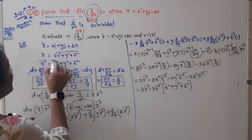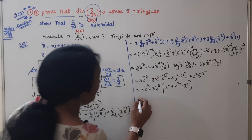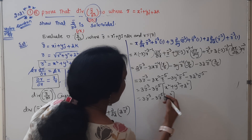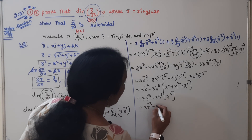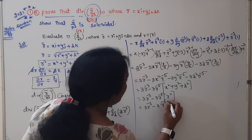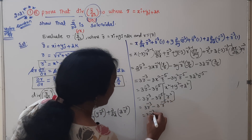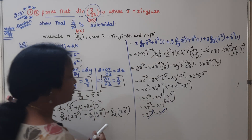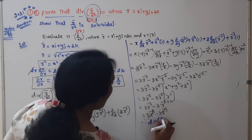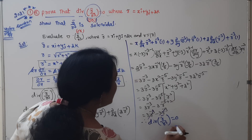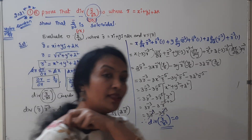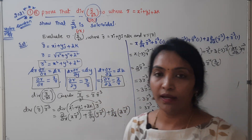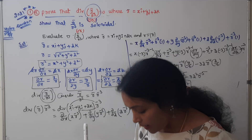We know x² + y² + z² = r², so putting the value: 3r^(-3) - 3r^(-5) · r² = 3r^(-3) - 3r^(-3). Positive and negative terms get cancelled. Therefore, div(r̄/r³) = 0. This means the given vector is solenoidal.